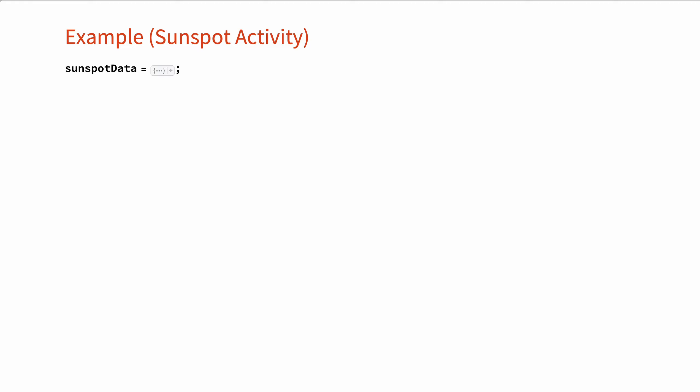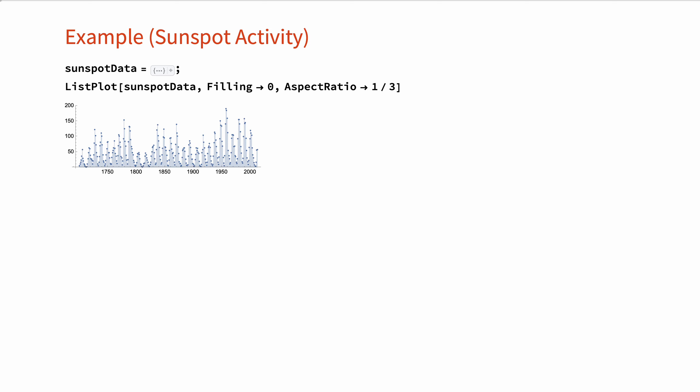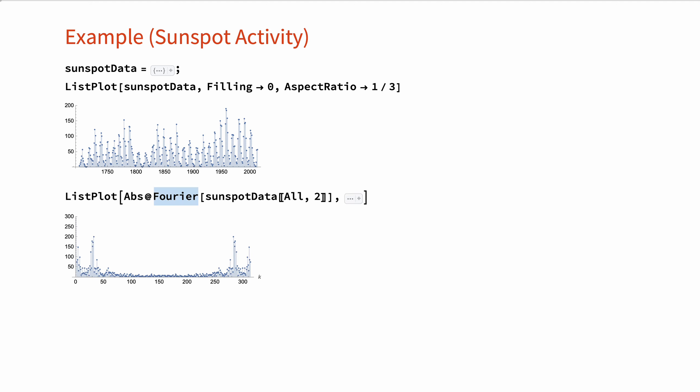Let's look at another example. The approximate periodicity of sunspot data is a well-known phenomenon — let's test it using Fourier series. Here is the yearly average sunspot activity from 1700 to 2012, a total of 313 years of measurements. With this data, let's compute the Fourier series coefficients of the sequence.